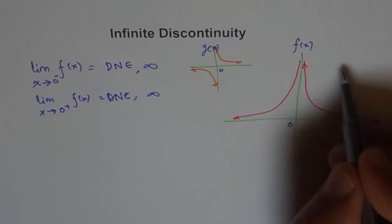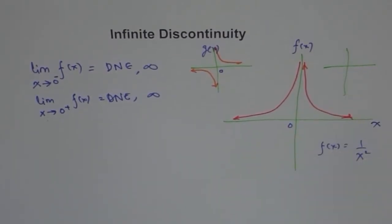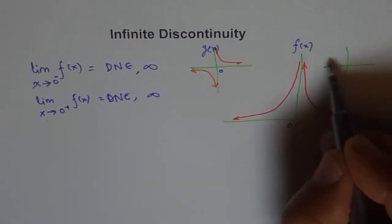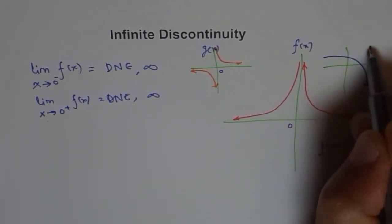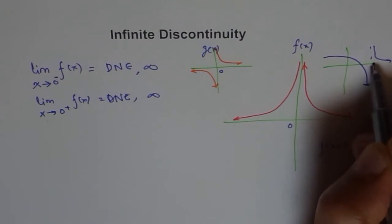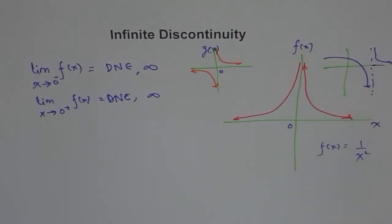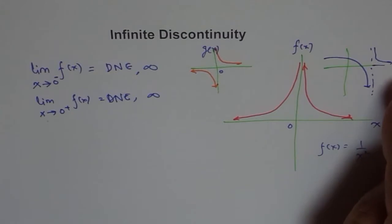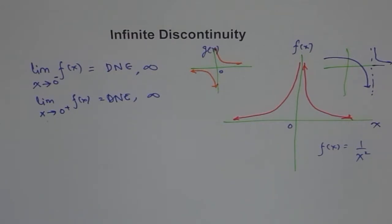We could also have a condition where we draw a function that approaches some value like this, where this is our vertical asymptote, and after this point it could go in another direction. Here also we see it could be approaching negative infinity. So these are different kinds of functions which could have infinite discontinuity — they basically have a vertical asymptote at that point, and you are approaching infinity, an undefined value, as you approach the function from at least one side.